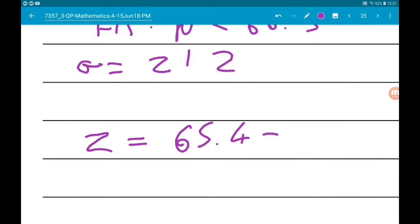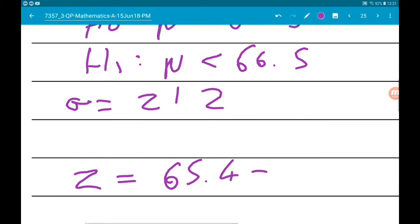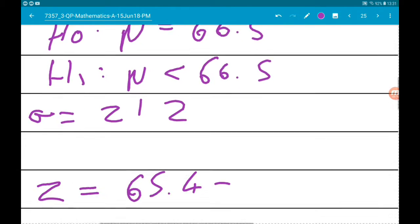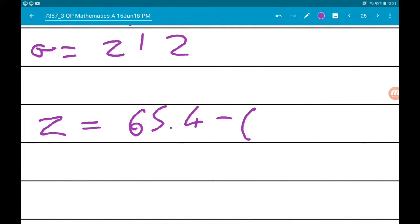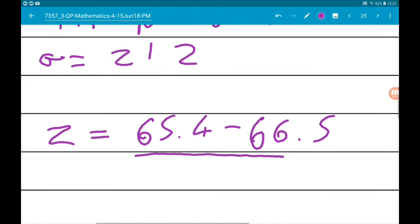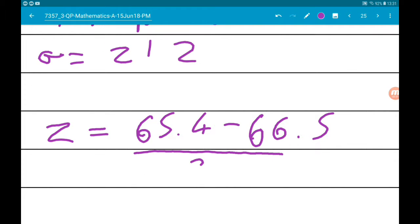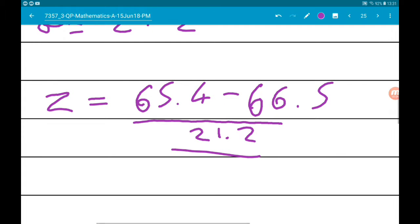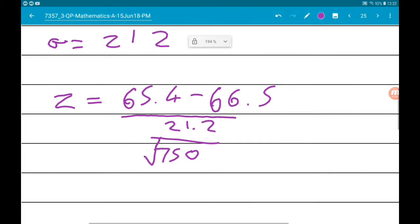Now we got that minus mu which is 66.5, over sigma which is 21.2, over root 750. Now that gives us minus 1.42.